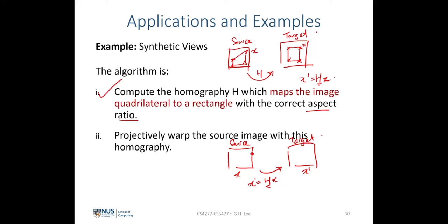Since H is already computed, to transform every pixel from the source image to get the target image, we compute a lookup table using the inverse transformation. For every pixel coordinate x prime in the target image, with the known homography H, we compute the corresponding location x in the source image and look up the corresponding RGB value to fill into the target image. This is how we warp the source image into the target image as given by the homography.